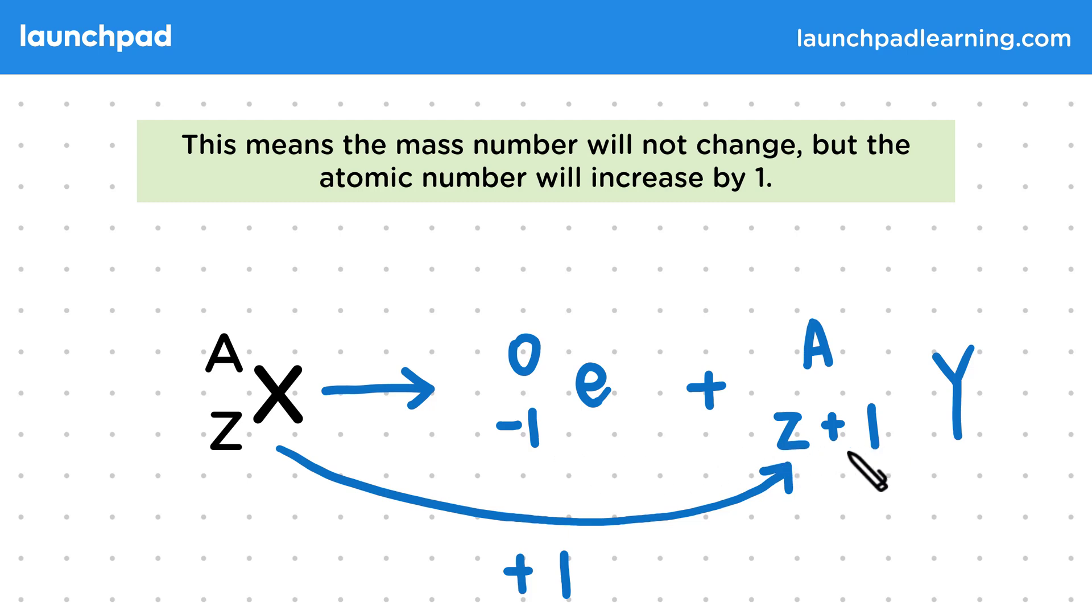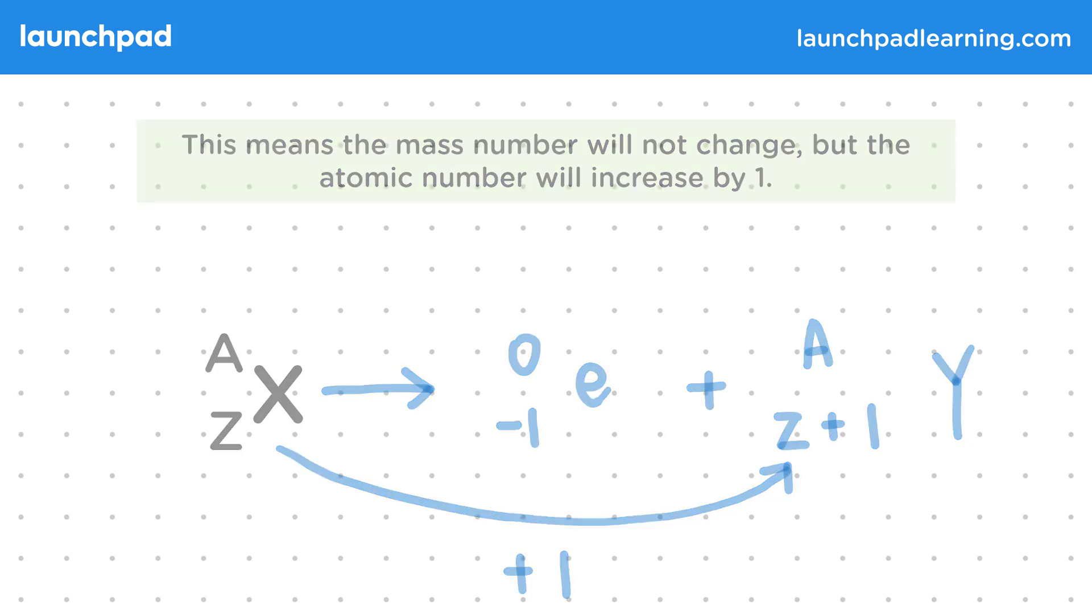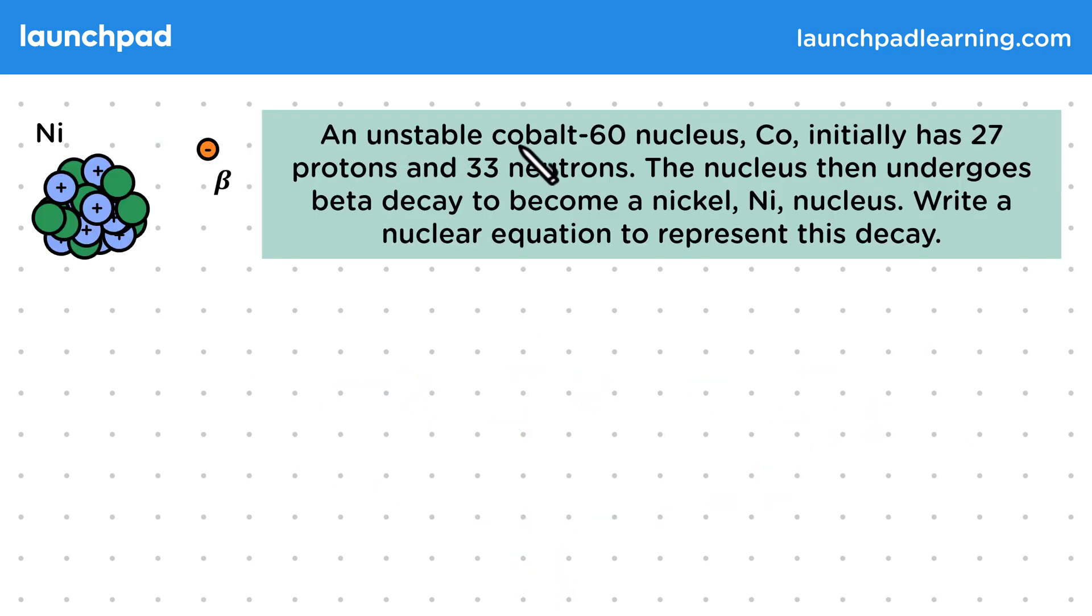Let's have a look at an example of beta decay. An unstable cobalt-60 nucleus, Co, initially has 27 protons and 33 neutrons. The nucleus then undergoes beta decay to become a nickel, Ni, nucleus. Write a nuclear equation to represent this decay.